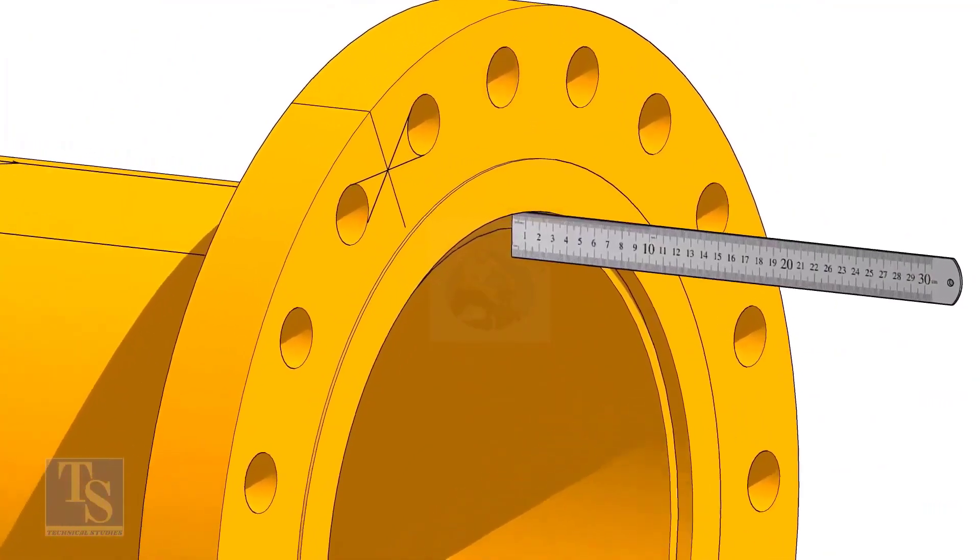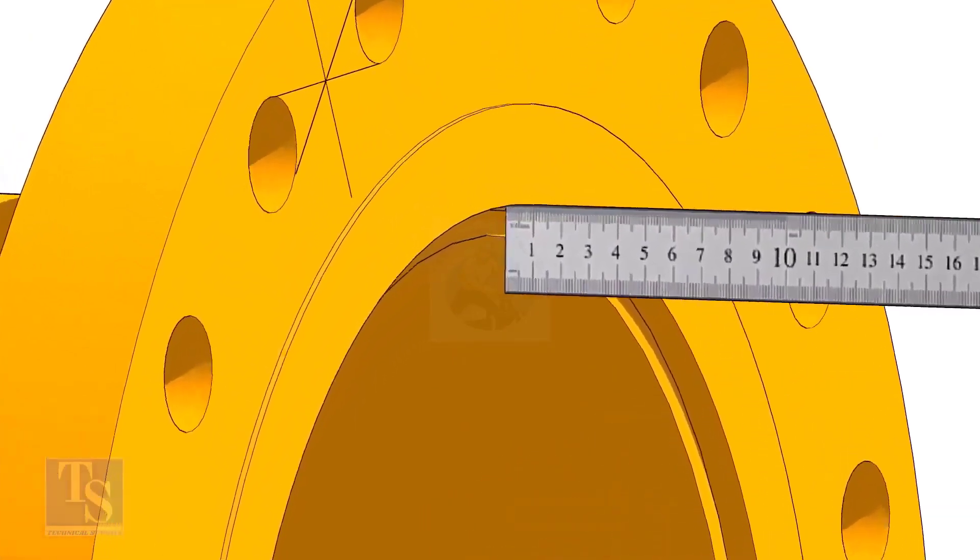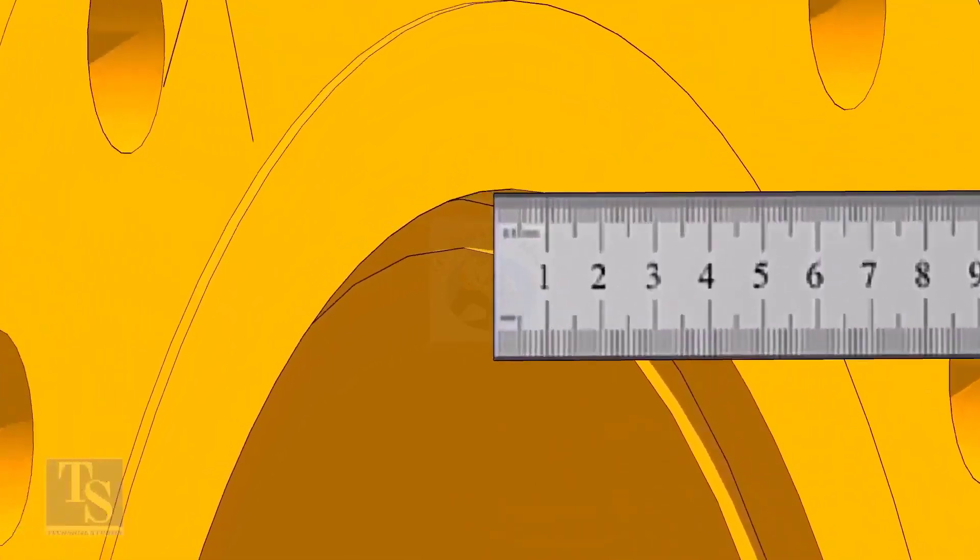Fix the distance between the flange face and the pipe face. Usually, this measurement is equal to the thickness of the pipe.